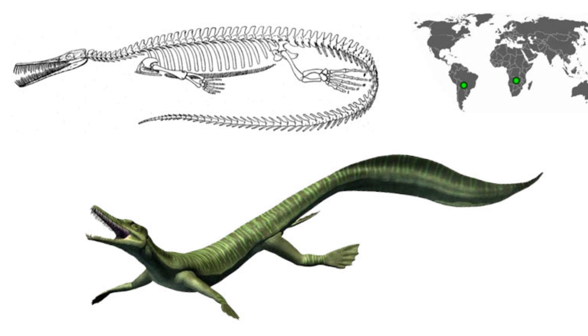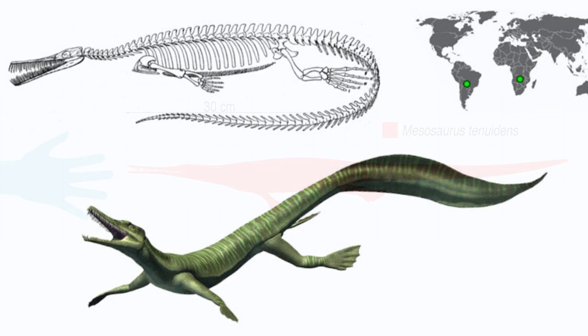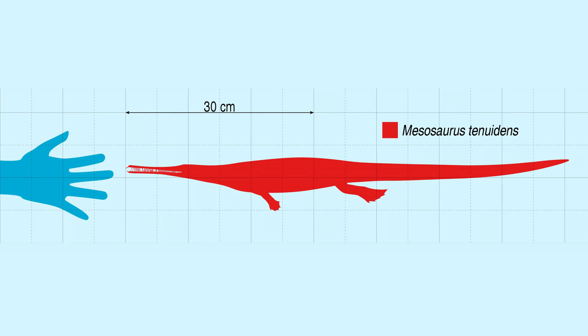Why didn't the Mesasaurus spread to a bunch of other areas? Wegener thought that these animals could only live in a specific climate and they should be freshwater animals, so they couldn't swim across the saltwater oceans to live in other areas of the planet.